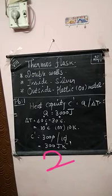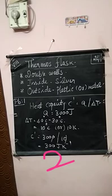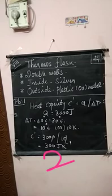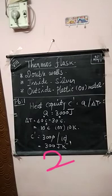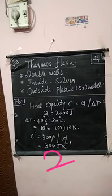Now for a numerical problem — book page number 6, problem number 1. The temperature of a metal ball is 30 degree Celsius. When an energy of 3000 joules is supplied, its temperature rises by 40 degree Celsius. Calculate its heat capacity.